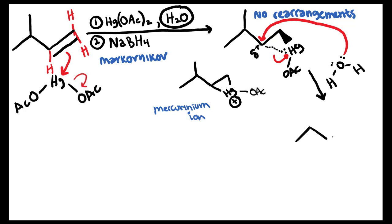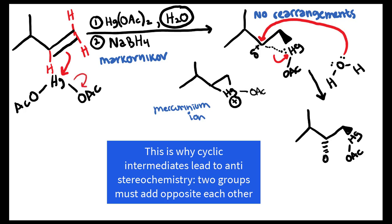We get our next intermediate, and the mercury is still on a wedge. Think about whether the water molecule wants to attack from the front face where there's the big mercury on a wedge, or from behind on a dash where it's less crowded. The water is going to want to go on a dash because on the front face the large mercury is in the way, so it's better for the water molecule to attack from the back face.